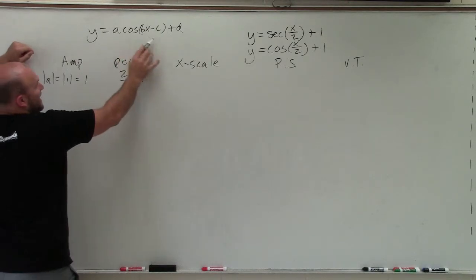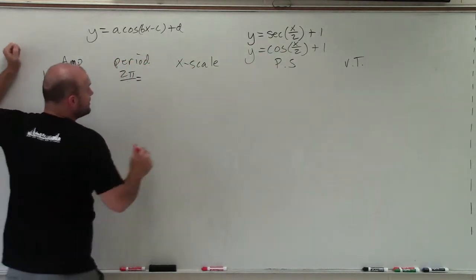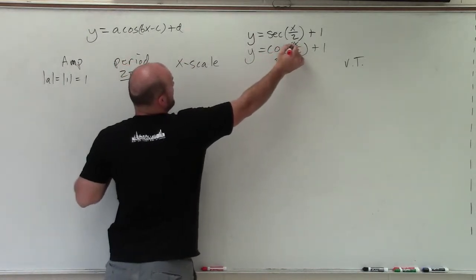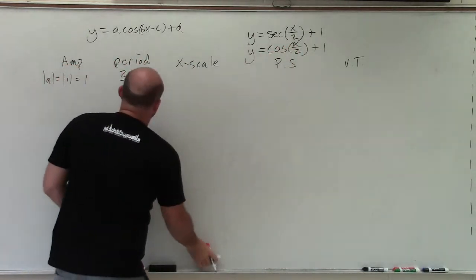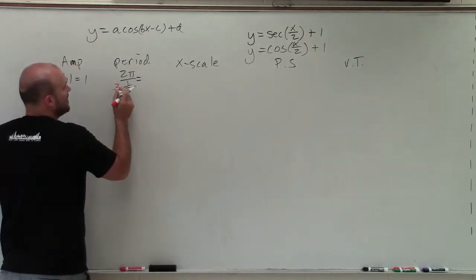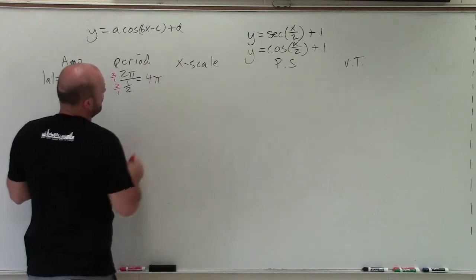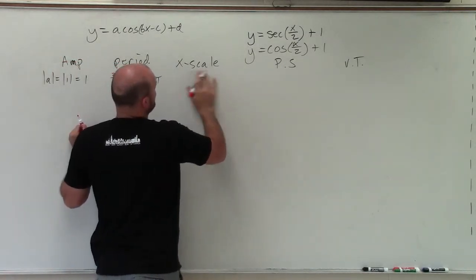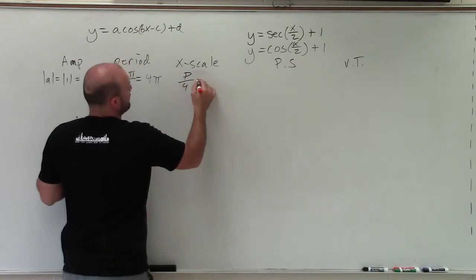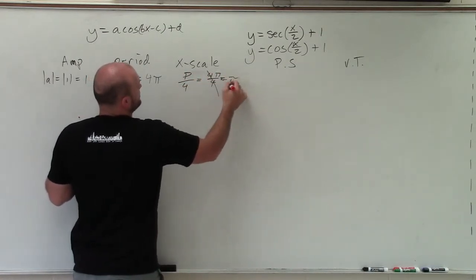b is the coefficient of x, which we don't have a coefficient. But you can see we have 1, and that 1 is being divided by 2. OK? So to solve this, I need to multiply by the reciprocal. And what I see is I get 4 pi. Then to find my x scale, I take my period divided by 4. Well, my period is 4 pi divided by 4, which equals pi.